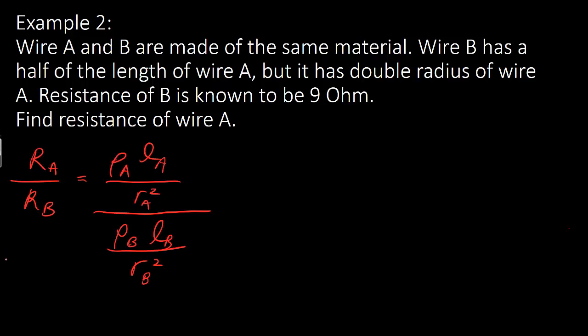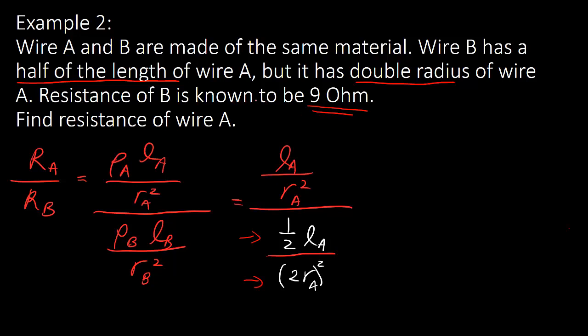You plug in the equation for R A and R B. And what you do is, once again, look at the equation. The question says R B has a half of the length of wire A and double radius of wire A as well. Then you simply express it here. Once again, don't forget the bracket for the R since you have a square here. Although the question this time told you that the resistance of B is already 9, but I'll do it at last. So you will see what happened later on.